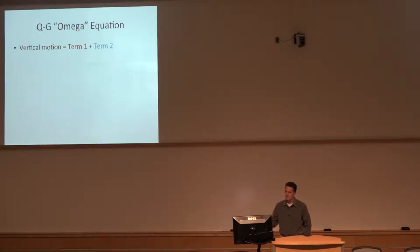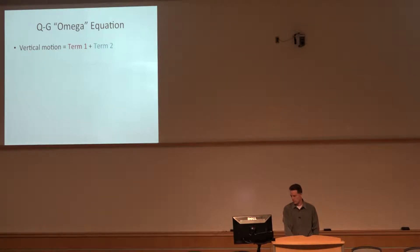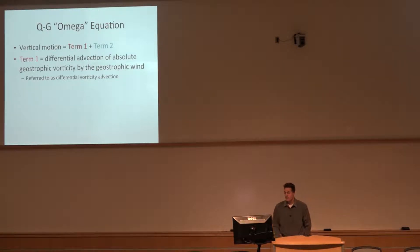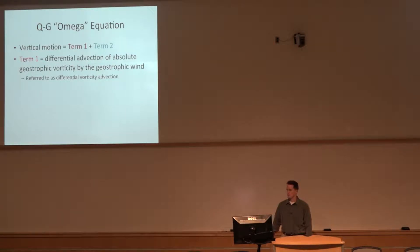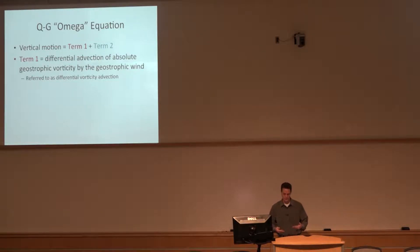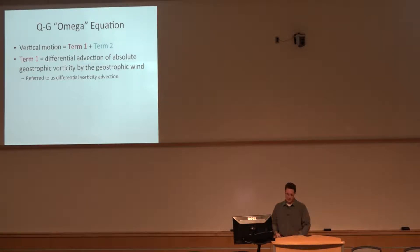The omega equation — again, simplest version you'll ever see — it's just a flipped version of the height tendency equation. In this case we've got differential advection of absolute vorticity by the geostrophic wind. It's primarily going to be just differential vorticity advection that we're looking for. So if cyclonic vorticity advection increases with height, that's a contribution to vertical motion or ascent.